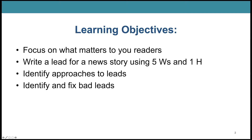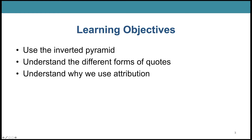We're going to learn about approaches to what are called leads — those first sentences that hook your readers — and we have to be able to not only write a good lead, but know when there's a good or bad lead. We're going to learn about writing the story using the five W's and the one H, then we're going to use the inverted pyramid, find different types of quotes, and understand why we use attribution. It's important when you're a journalist.